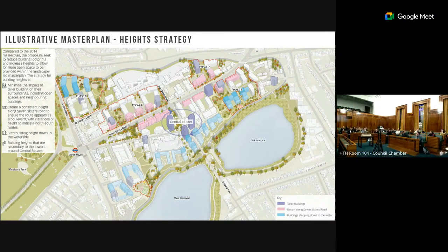A councillor emphasises at the pre-application stage that this has caused quite a lot of controversy — this estate has had such a long regeneration and is potentially not going to re-provide all the council housing that was there, though they take the point about the floor space uplift. When you bring the application, that detail will be really useful in helping the committee make their decision. There is a request to consider any increase in social homes, which is really needed in this borough, and ideally to at least match the number that was there initially.